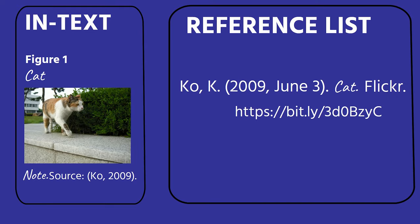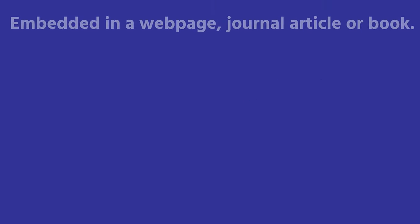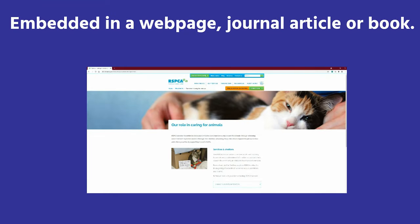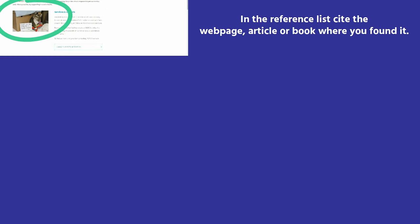The other type of image is embedded in a webpage, journal article, or book. This type of image is cited in text, but in the reference list you reference the webpage, article, or book where you found it.